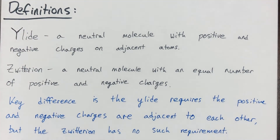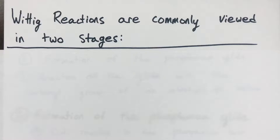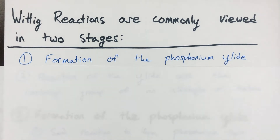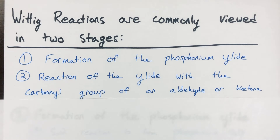The key difference is that an ylid requires positive and negative charges on adjacent atoms, but a zwitterion does not have that requirement — the charges can be on any atom and it is still considered a zwitterion. The Wittig reaction can generally be viewed in two stages: first, formation of the phosphonium ylid; and second, reaction of that phosphonium ylid with a carbonyl species — either an aldehyde or a ketone — to generate the alkene.